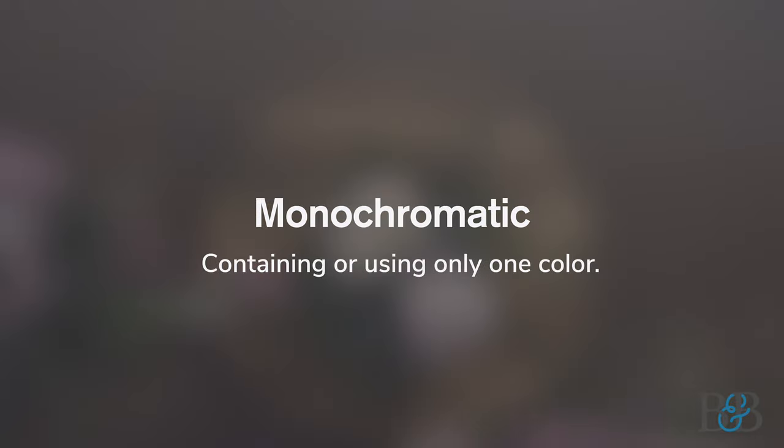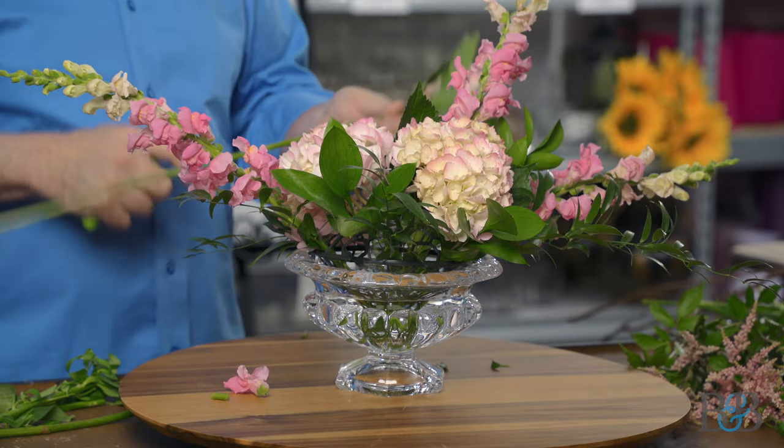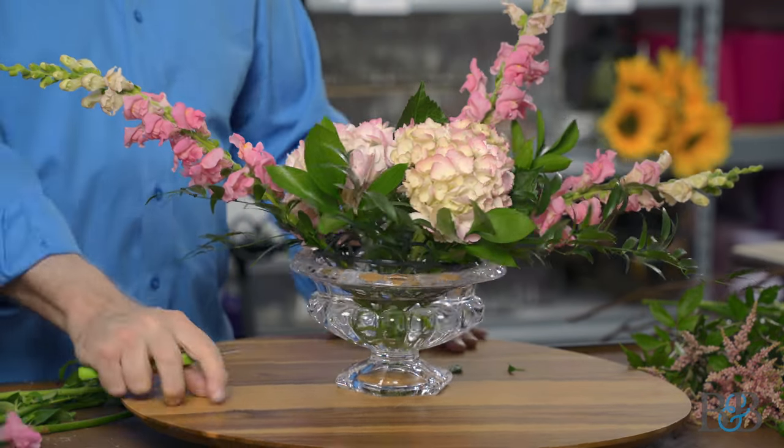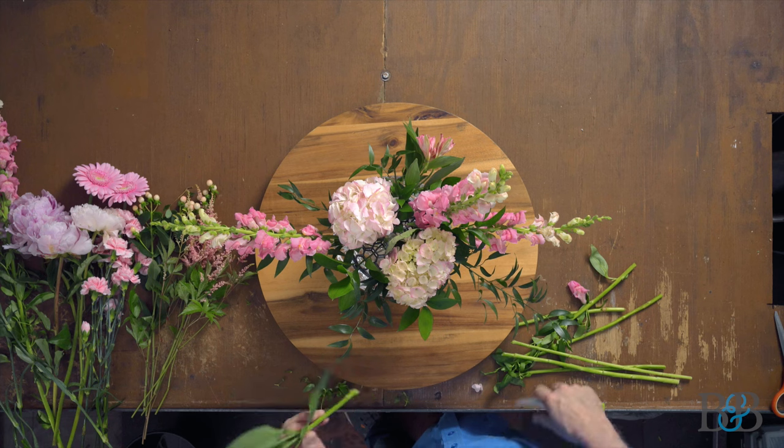The first color scheme we're going to talk about today is monochromatic. Monochromatic is using one color. You typically would think of it as — I know I have a client who loves all-white flower arrangements, and if you're watching this you know who you are. We've finally gotten her over to the dark side a little bit so she'll order arrangements with some color, but she does love her all-white arrangements, and I have to admit they really are beautiful.